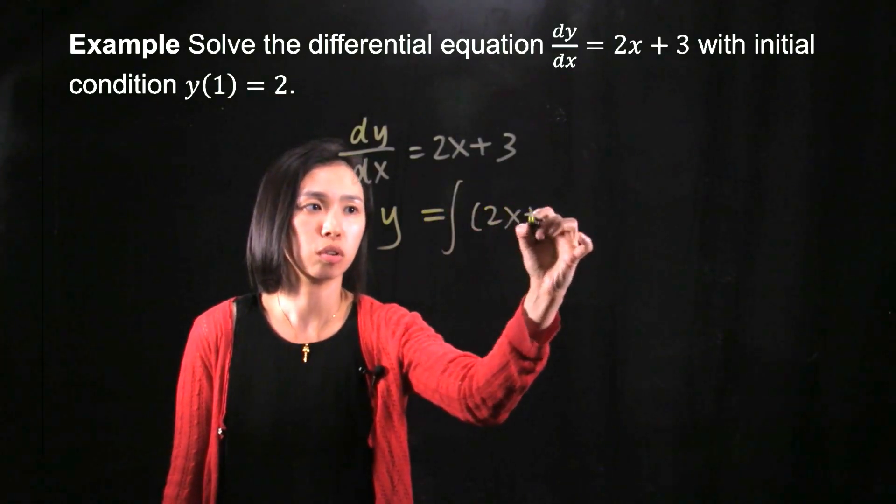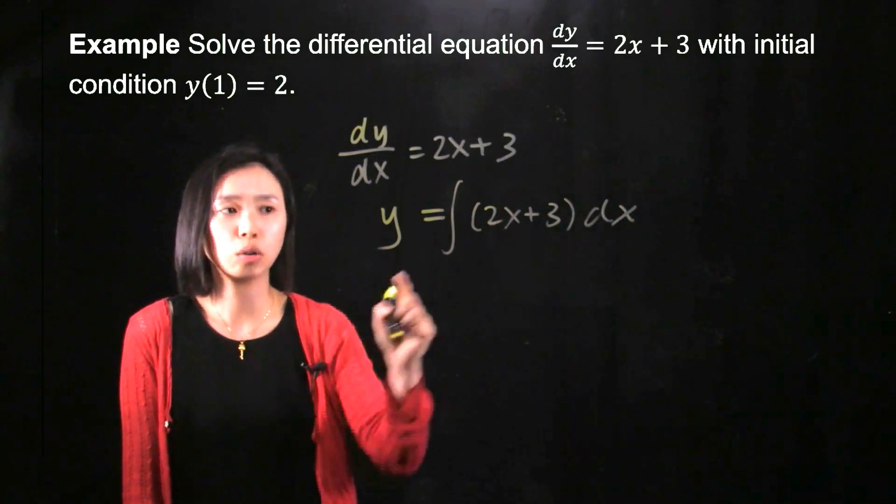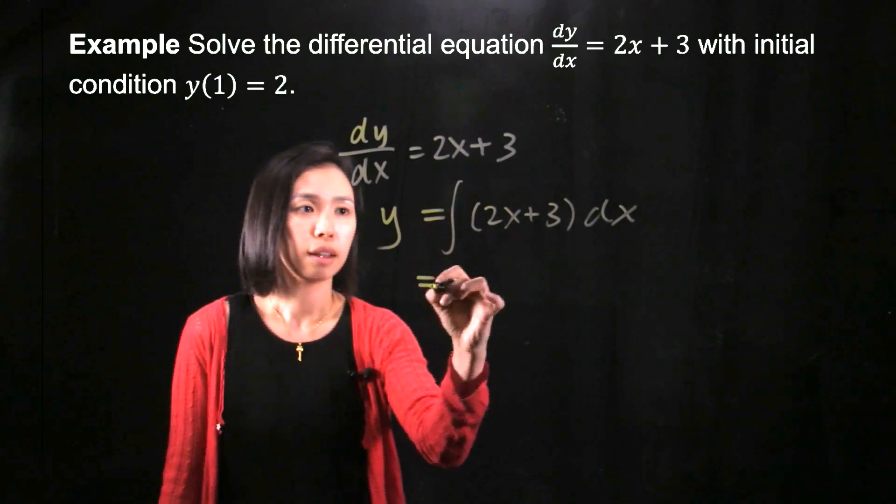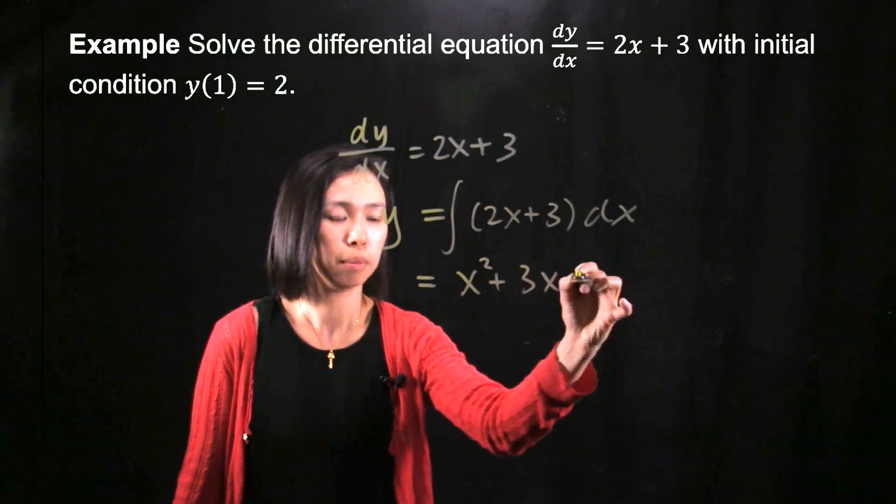So what you need to do is integrate. If you still do not know how to do the integration, go back to your calculus. And then you integrate 2x, you've got x squared, 3x plus C.